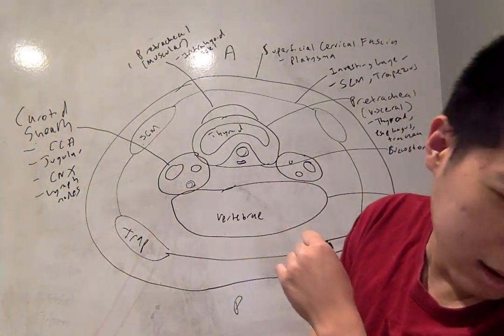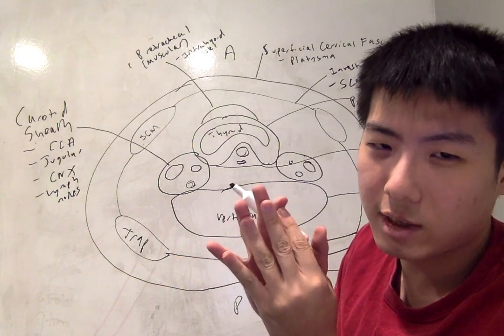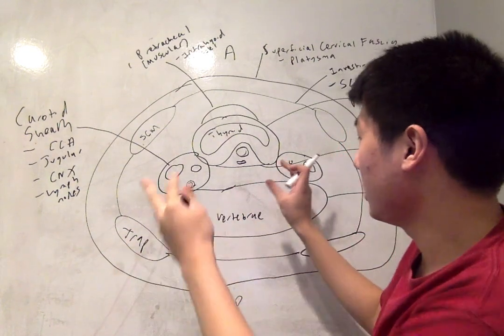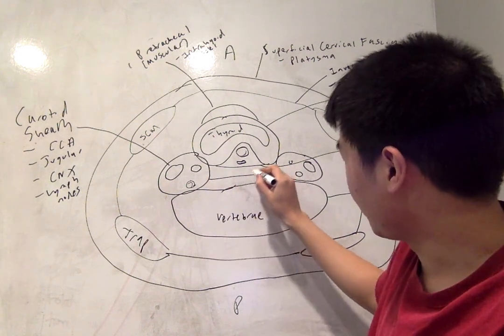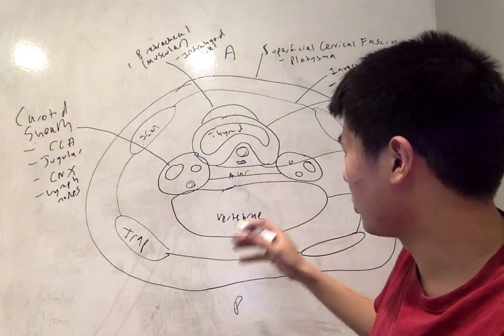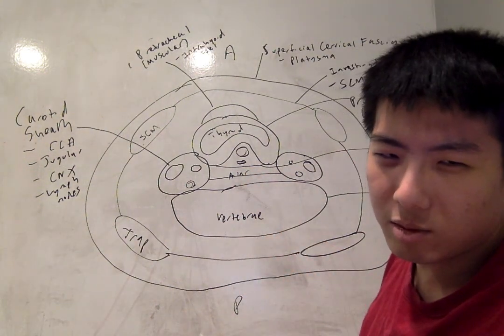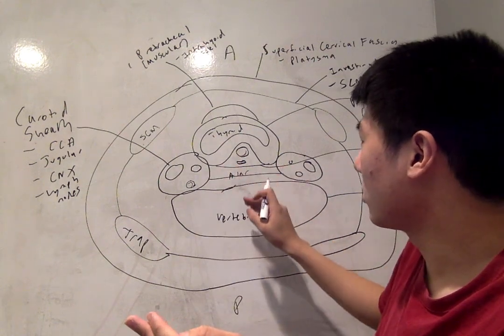And the last fascia that I want to talk about is this fascial layer that bridges the two carotid sheaths right down the middle. This is called the alar fascia, which is a thin strip. This one is notable because it divides this middle space here into two compartments.